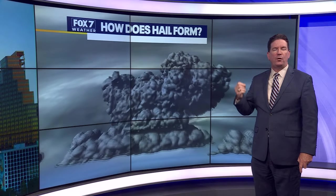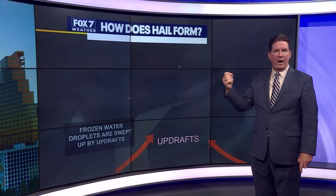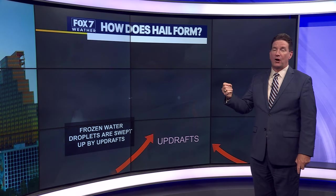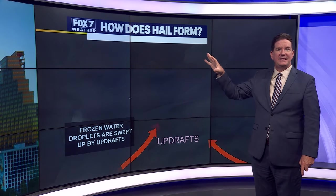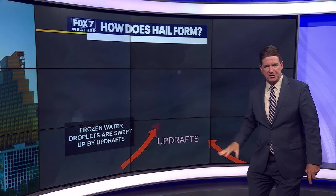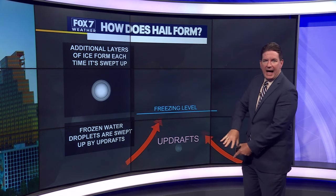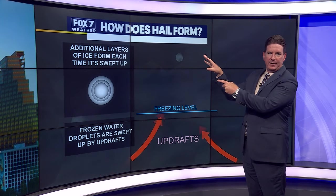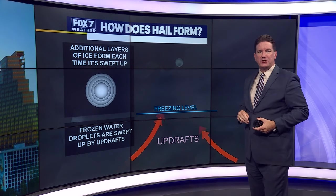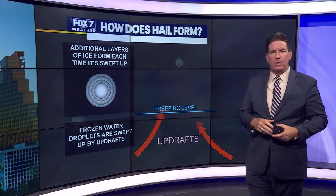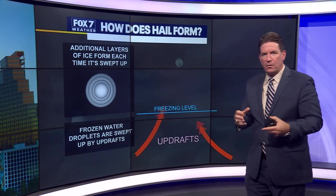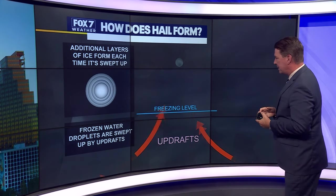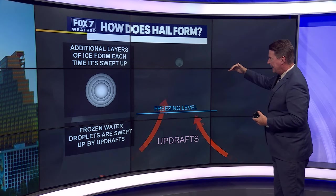The number one ingredient: you need powerful and very strong updraft winds. Those aren't the winds coming down and out of the storm — those are the winds going up within the storm. And with those very strong winds, it will carry those frozen water droplets above the freezing line.